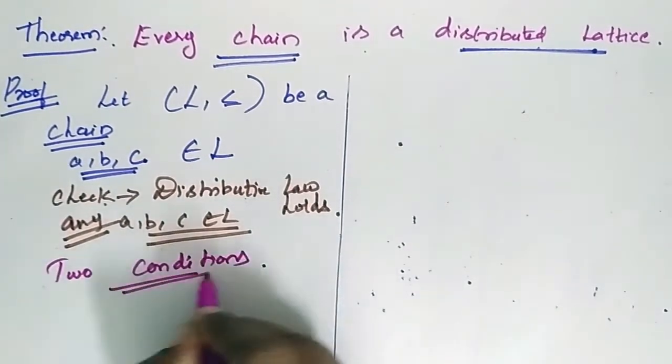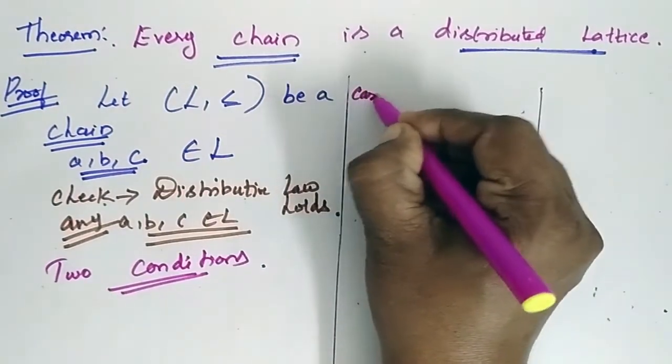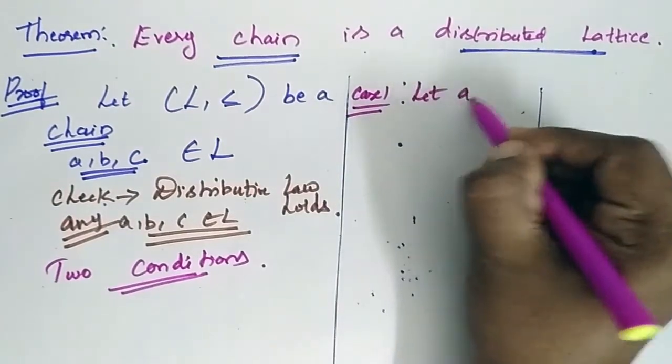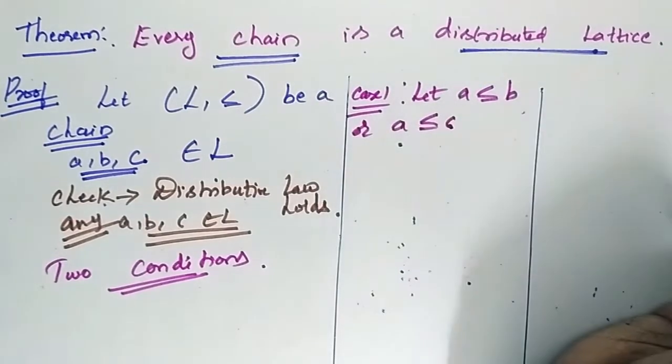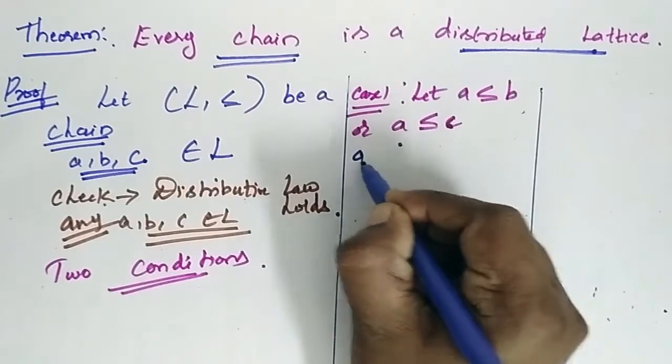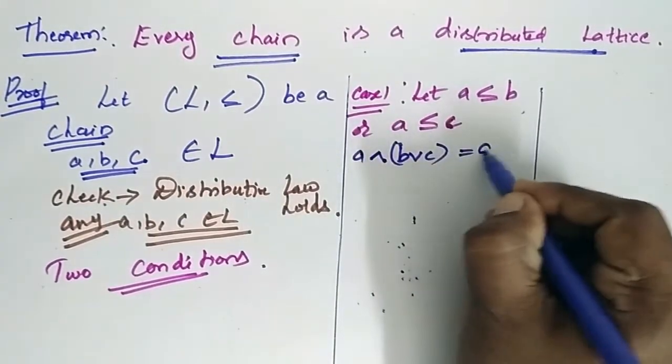We will check out the first condition. Case 1: Let a is less than or equal to b or a is less than or equal to c. In this case, we should have a meet b join c is equal to a.